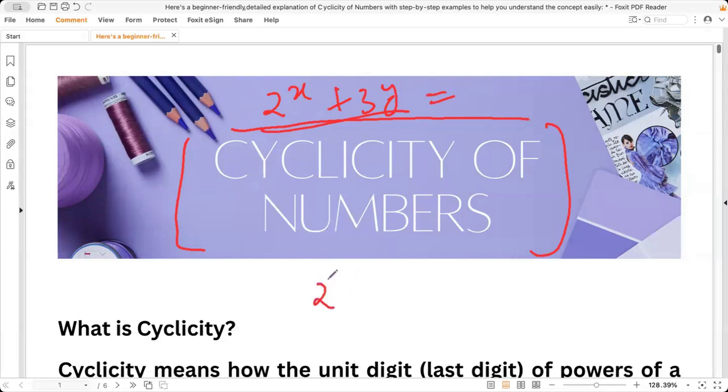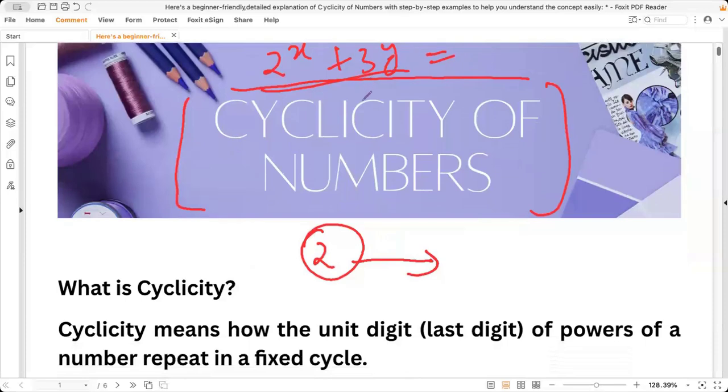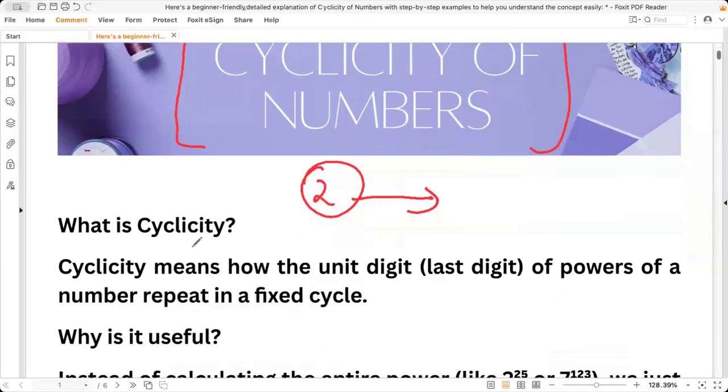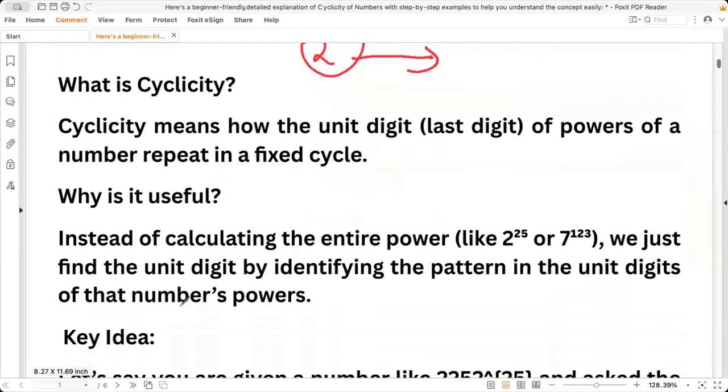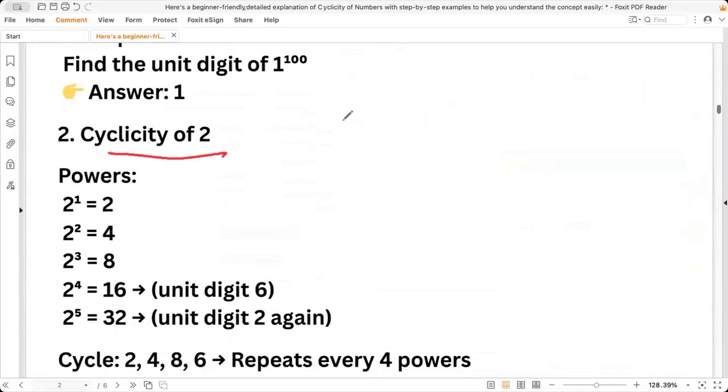Because every number, if there is any power, the unit digit is repeating itself in a cyclical manner. That pattern we will try to understand and cram so that any question comes - it comes every year, it has to come - we can solve it with ease, precision and accuracy. So let's start with the cyclicity of two. Cyclicity of two goes in a block of four.